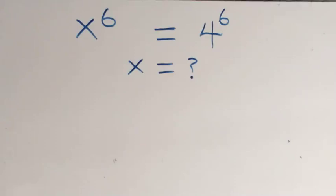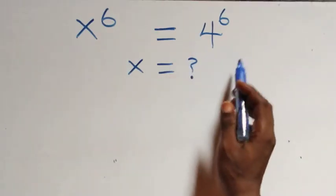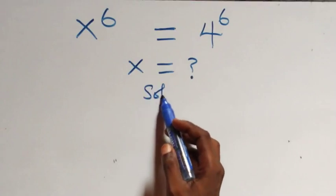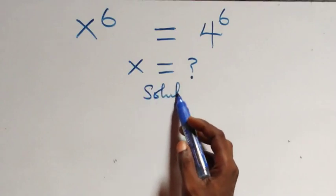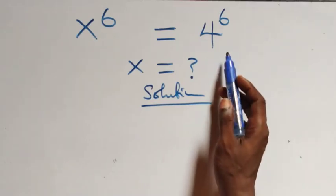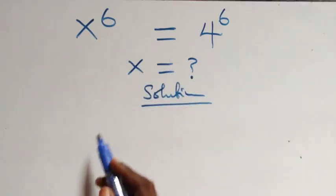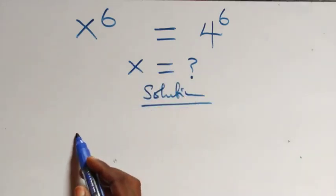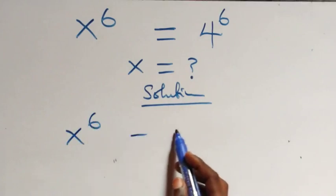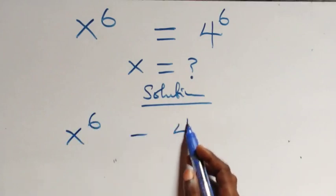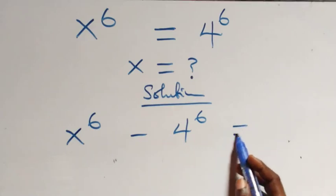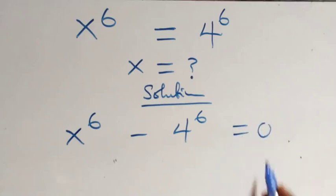How to solve this nice exponential equation. We take 4 raised to the power 6 to the left-hand side, and what we have becomes x raised to the power 6 minus 4 raised to the power 6 equals 0.